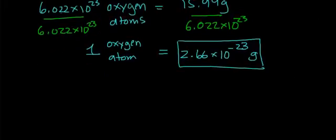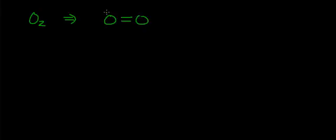If we wanted to find the mass of one oxygen molecule, the form of oxygen that you breathe in is called O2. It has a molecular structure of two oxygen atoms joined by a double covalent bond, with two lone pairs on each oxygen atom. That's not necessary to know to calculate the mass, but it's good information to have.